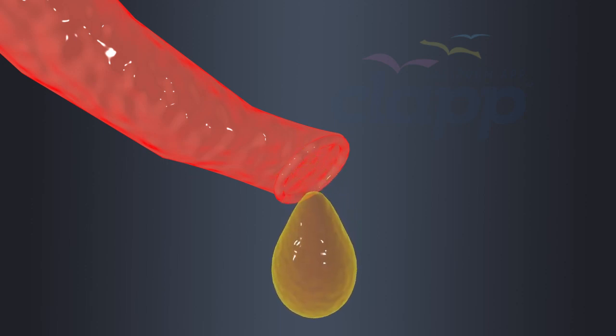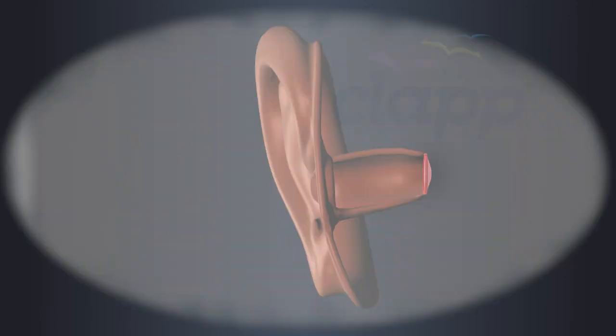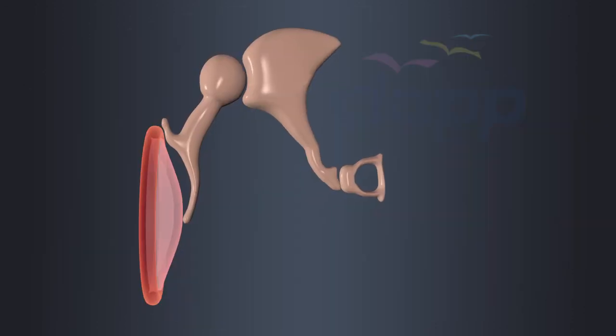When sound waves enter the ear canal, they cause the eardrum to vibrate. The vibrations of the eardrum are then transferred to the ossicles in the middle ear.